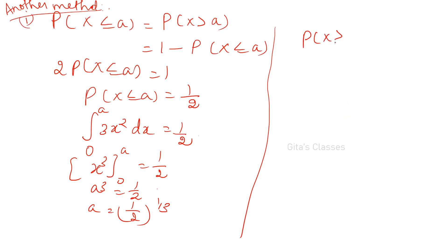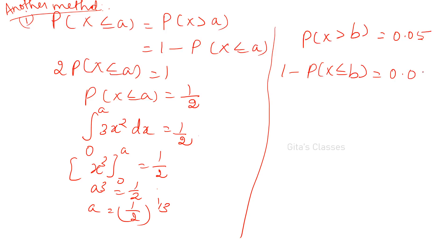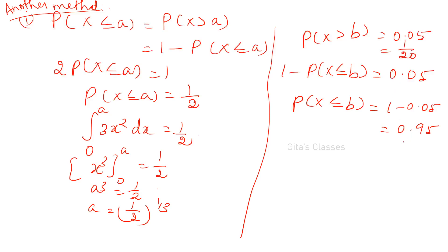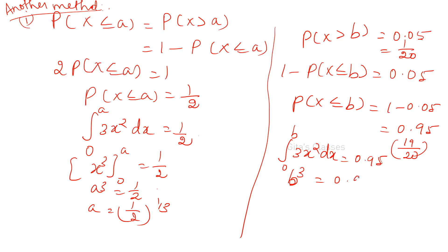For part two using the second method: P(X > b) = 0.05, so 1 − P(X ≤ b) = 0.05, giving P(X ≤ b) = 0.95. Then ∫₀ᵇ 3x² dx = 0.95, so b³ = 0.95, therefore b = (0.95)^(1/3), or equivalently (19/20)^(1/3).